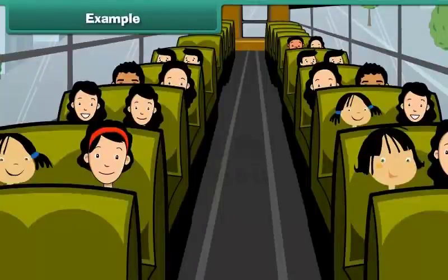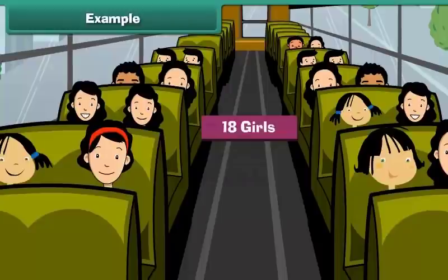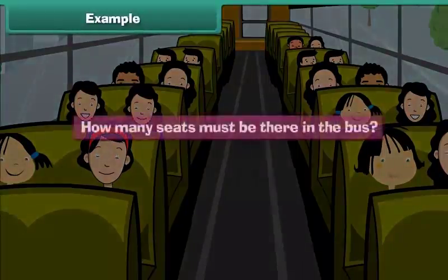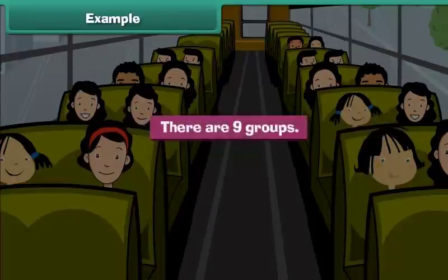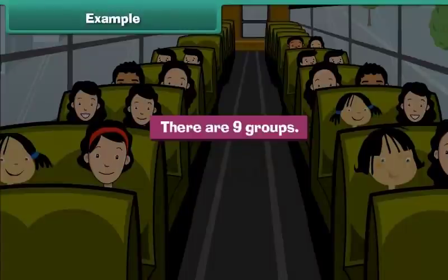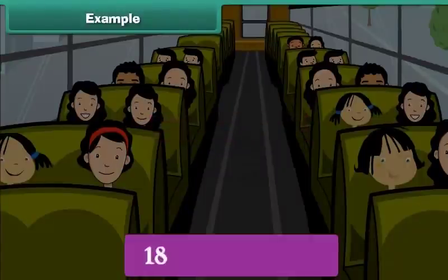Example: 18 girls have to be seated in a bus. 2 girls can sit in a single seat. How many seats must there be in the bus? Divide the girls into groups of 2. There are 9 groups, so there must be 9 seats in the bus. We can write this as 18 divided by 2 is equal to 9.